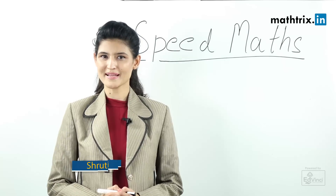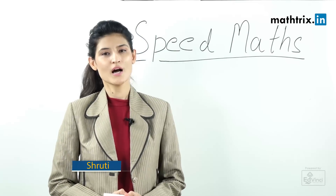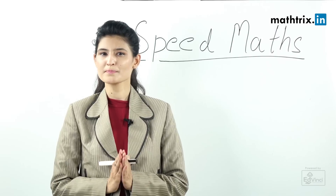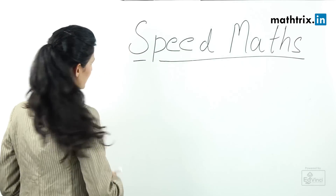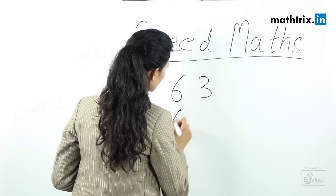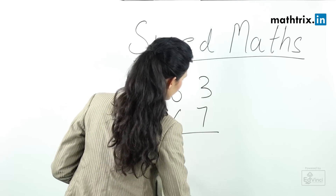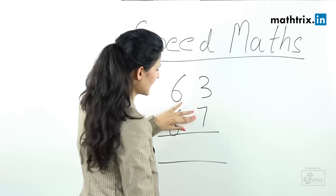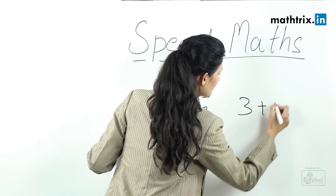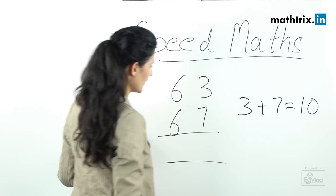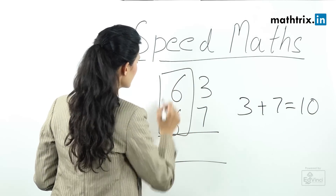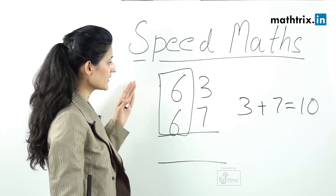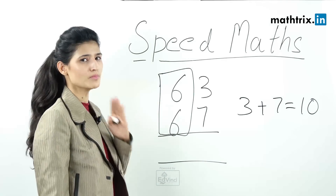Hello everyone and welcome to Speed Math Classes. Today I'm going to tell you how to do multiplication of partially complementary numbers. Before that, let me explain what partially complementary numbers are. For example, take 63 and 67 — the unit digits, 3 and 7, add up to 10, and the remaining part of the number, which is 6, is the same in both. Those are the conditions for partially complementary numbers.